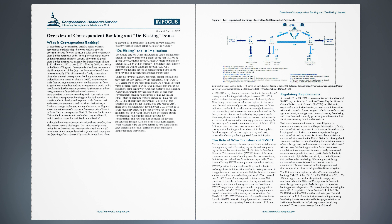Regulatory requirements: A central US AML-CFT requirement for wire transfers and SWIFT payments is the travel rule, issued by the Financial Crimes Enforcement Network (FinCEN) in 1996, which requires financial institutions to pass on certain information with a wire transfer. It was designed to help law enforcement agencies detect, investigate, and prosecute money laundering and other financial crimes by preserving an information trail about persons using fund transfer systems. Banks are also required to conduct due diligence on customers opening accounts, with special attention to foreign correspondent banking account relationships. Special record-keeping and certification requirements apply to foreign correspondent banking accounts. A bank that maintains a correspondent account in the United States for a foreign bank must also maintain records identifying the individual owners of each foreign bank, and must ensure it is not a shell bank without bona fide banking activities.